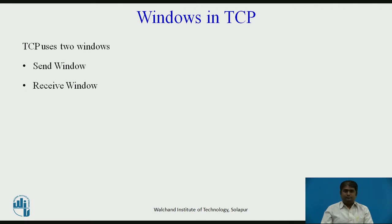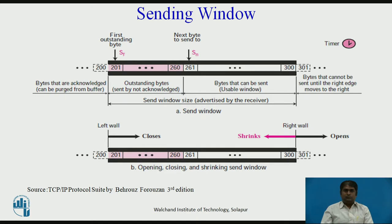The figure shows an example of a send window of size 100 bytes; normally it is thousands of bytes. The figure shows how a send window opens, closes and shrinks. The send window in TCP is similar to one used with the selective repeat protocol, but with some differences. The first difference is the nature of entities related to the window: TCP numbers bytes, and actual transmission occurs segment by segment, but the variables that control the window are expressed in bytes.